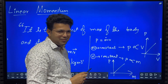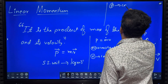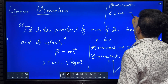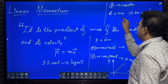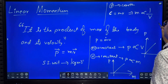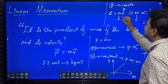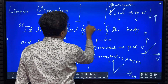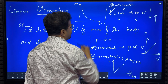If linear momentum is constant, then constant equals m into v, so m is inversely proportional to v. As velocity increases, mass decreases in order to keep linear momentum constant. If you plot a graph between m versus v, that will give you a rectangular hyperbola.